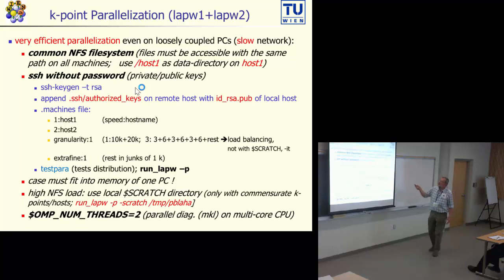To make the parallelization in a specific case directory, you create a .machines file with lines like 1:host1, maybe 2:host2. In this example, I have assumed that host two is twice as fast as host one, because the first number here is a speed, and then after the colon this is the host name. So you can even make use of two different PCs, a slow one and a fast one, by giving the relative speeds of those two computers in such lines.